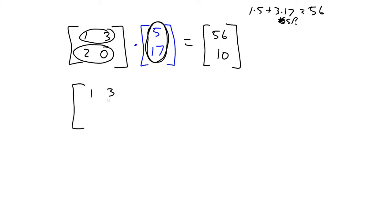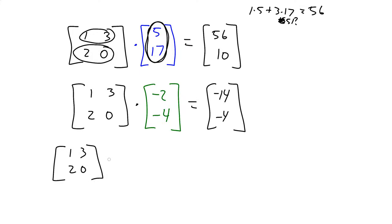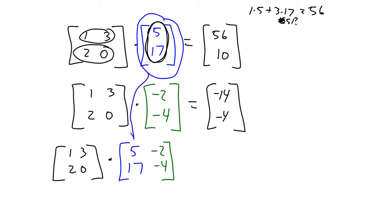Now imagine I take that same matrix and multiply it by a different vector: negative 2, negative 4. That operation is defined because the vector is the right length. We get 1 times negative 2 plus 3 times negative 4 equals negative 14, and 2 times negative 2 plus 0 times negative 4 equals negative 4. So the result is [negative 14, negative 4]. Now, what if I want to multiply the matrix by a 2 by 2 — taking those two column vectors and putting them side by side as columns of one matrix?